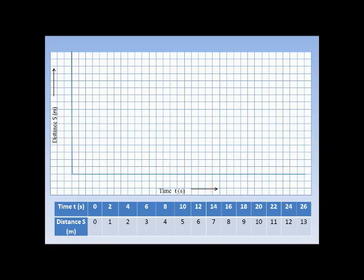Our next focus should be on deciding on the scale. Now, after drawing the axis, we have 33 divisions left on the x-axis, and 17 divisions on the y-axis. And if you look at the time, we have 26 seconds to be plotted on 33 divisions here available, and 13 meters to be plotted against 17 divisions available.